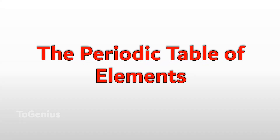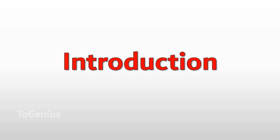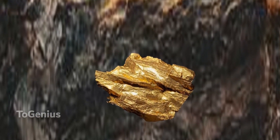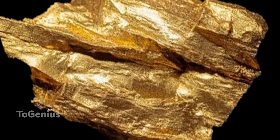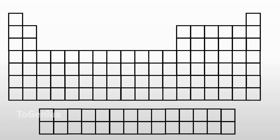The Periodic Table of Elements — Introduction. Everything in the world is composed of incredibly tiny particles called atoms. An element is a substance made of only one kind of atom. If you look at the periodic table, it is not even — it is a strange table. Let's examine it one element at a time.